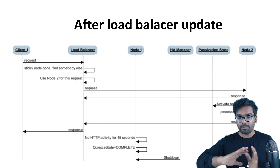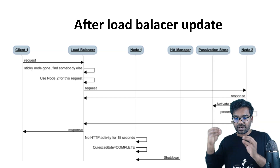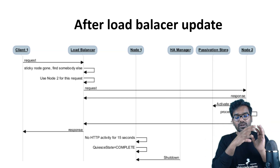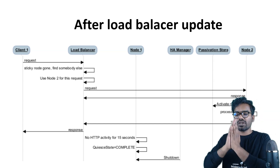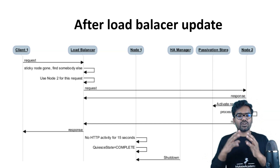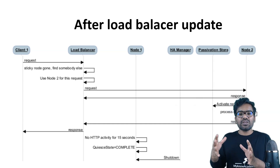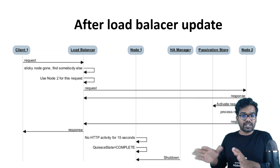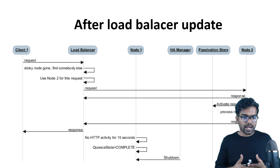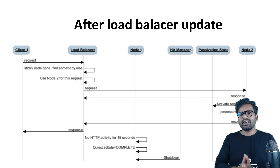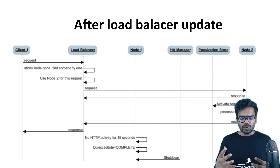At this point node 1 is not yet completely shut down — the HA Manager requested to remove the node from the load balancer. But when there are no more HTTP requests to the quiesced server, we can say the quiesce process is completed: all active sessions are active in a different server, everything is queued and migrated. Only then does the shutdown happen and the server goes entirely down. This is all about the quiescing process.